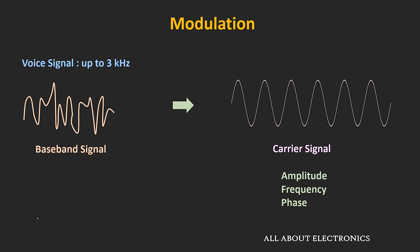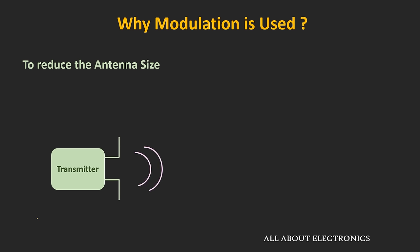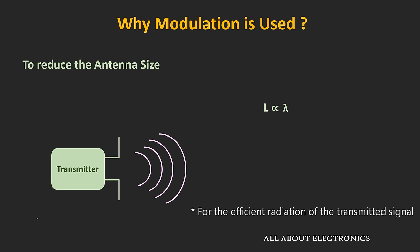First, let's see why modulation is required. The first reason is to reduce the antenna size. When a signal is transmitted wirelessly, the size of the antenna is a very important parameter. The size of the antenna is proportional to the wavelength of the transmitted signal, and depending on the type of antenna, it is a fraction of the transmitted wavelength.